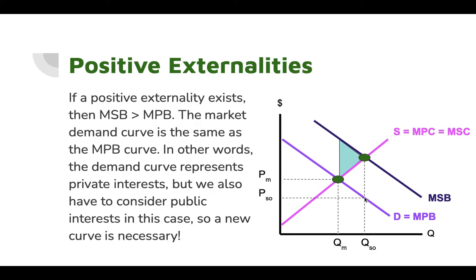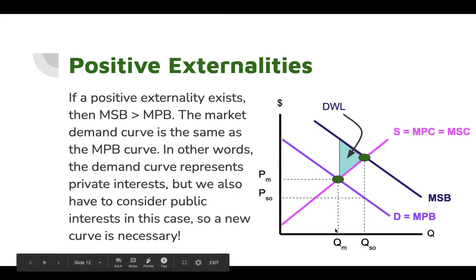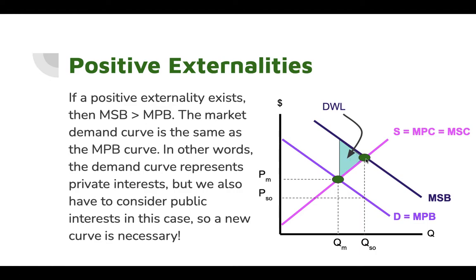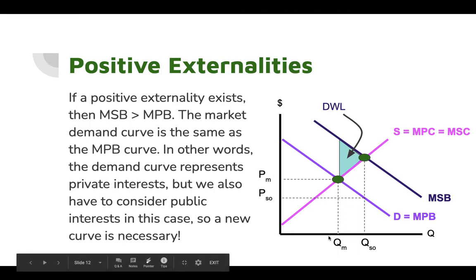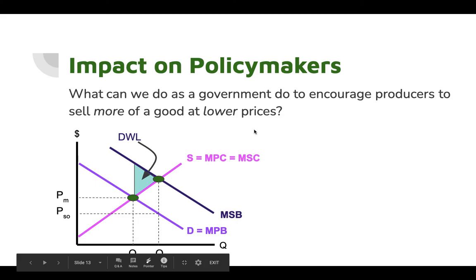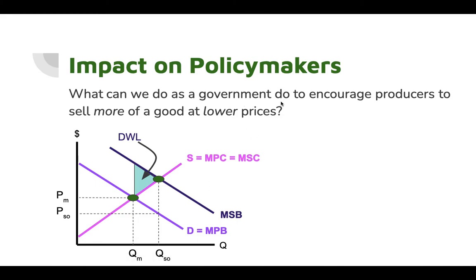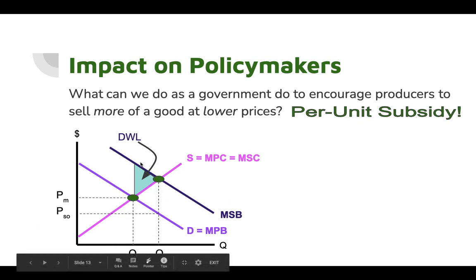What can the government do to fix this deadweight loss and encourage more production? The deadweight loss triangle points to the socially optimal equilibrium — it's pointing to the right, telling us society wants more. A per unit subsidy will help with this situation and, if effective, can actually eliminate this deadweight loss altogether. The government gives money to producers in this market, decreasing the marginal private cost of production — it costs less to make this good — so the new supply curve shifts downward.